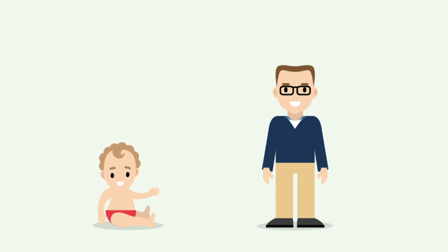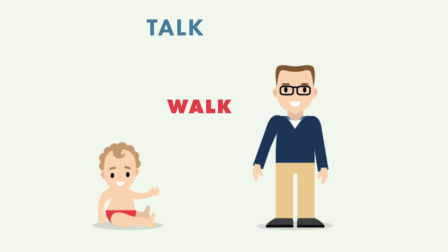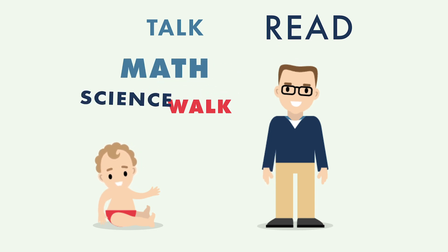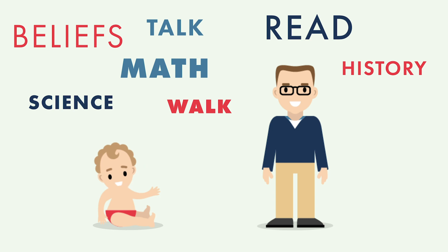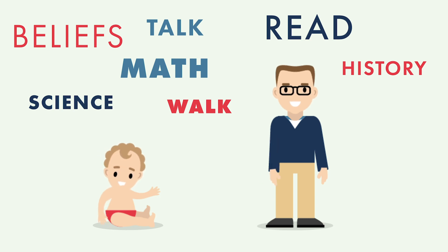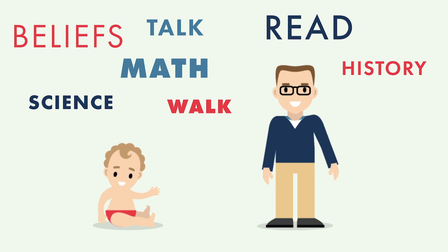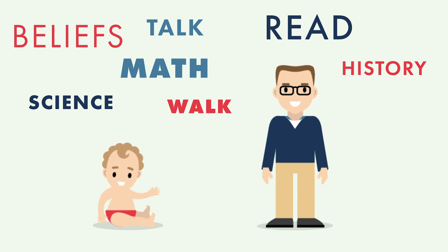Well, you know many things. That includes how to talk, how to walk, how to read, how to do math. You know things about science, about history. You know your own beliefs, what matters to you, how to behave with other people. These are all things that came from one of two places — they were either in your genes when you were born, or you learned them through the experiences that changed who you are.